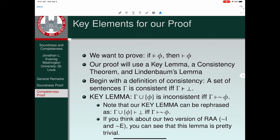We can rephrase our key lemma in formal terms: gamma-union-phi proves Folsom if and only if gamma proves not-phi, and the reverse direction as well. It's an if-and-only-if claim. This formal characterization replaces the language of inconsistency with the terminology of provability of the negation.